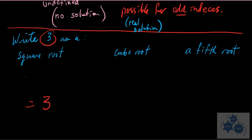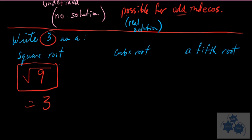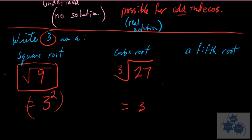Now, I want you to write 3 as a square root. Three is equal to what as a square root? The square root of 9 — because we had to square 3. Now what's the cube root of what that gives me 3? The cube root of 27 is 3. So 3 written as a cube root is the cube root of 27.